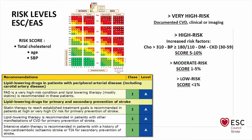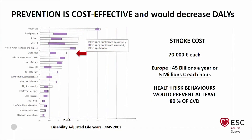As you can see, the recommendations — in case of very high-risk condition, high cardiovascular risk, other manifestations of CVD in primary prevention, and in secondary prevention — are all Class 1A, 1A, 1A, and 1A.